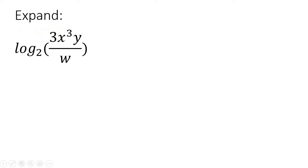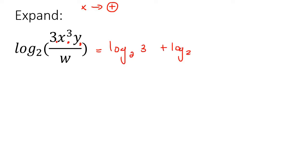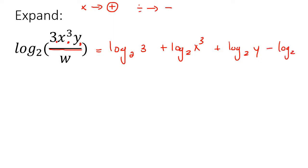I know it looks overwhelming, but what I want you to realize is that this 3, this x³, and this y are all being multiplied. We know that multiply turns into a plus. So it's going to become log₂(3) plus log₂(x³) plus log₂(y). And then there's a divide sign, so divide means minus — so we say minus log₂(w).